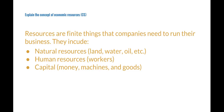Next, we will explain the concept of economic resources. Resources are all the things used in producing goods and services, and they are also finite things that companies need to run their business. The three types of resources are natural resources like land, water, and oil; human resources like workers; and capital resources like money, machines, and goods. Another name for human resources is labor, as most human resources pertain to some sort of labor that they provide.